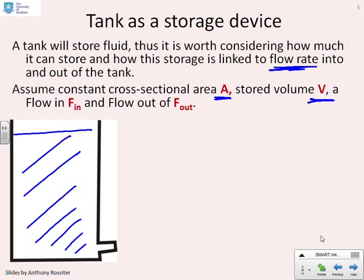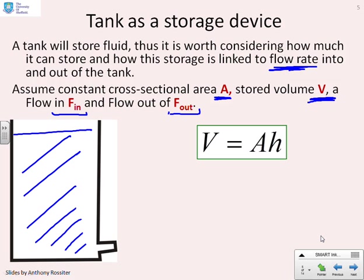We need to know about how much fluid is stored altogether, so the stored volume. We might need to know what's the flow in and what's the flow out. So what are the sort of expressions we can get? The volume is going to be the cross-sectional area times the depth. That's standard GCSE maths.